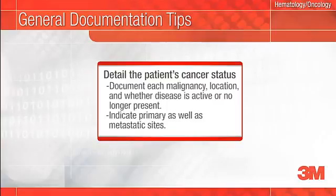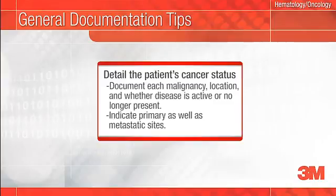For leukemias and lymphomas, it is important to document if the patient is in remission or relapse or has never achieved remission. Documenting 'history of colon cancer two months ago' makes it difficult for the coding professional to ascertain the patient's status and assign an accurate code, which in turn may inaccurately reflect the severity of illness or risk of mortality of your patient.